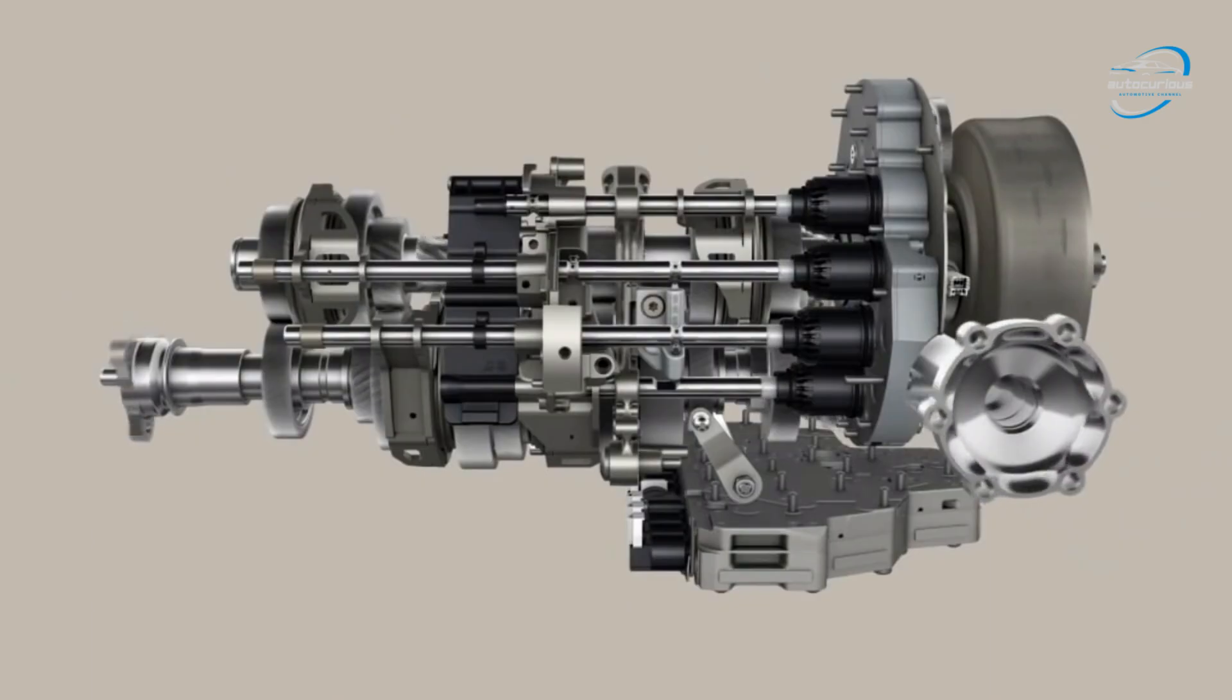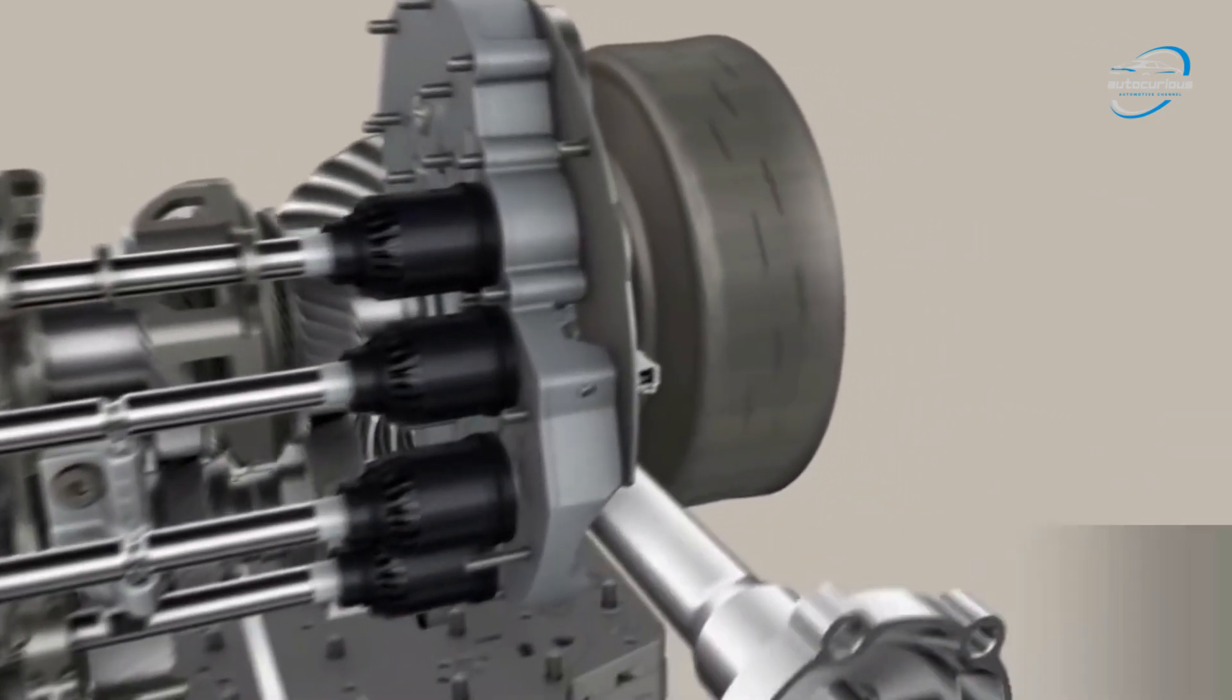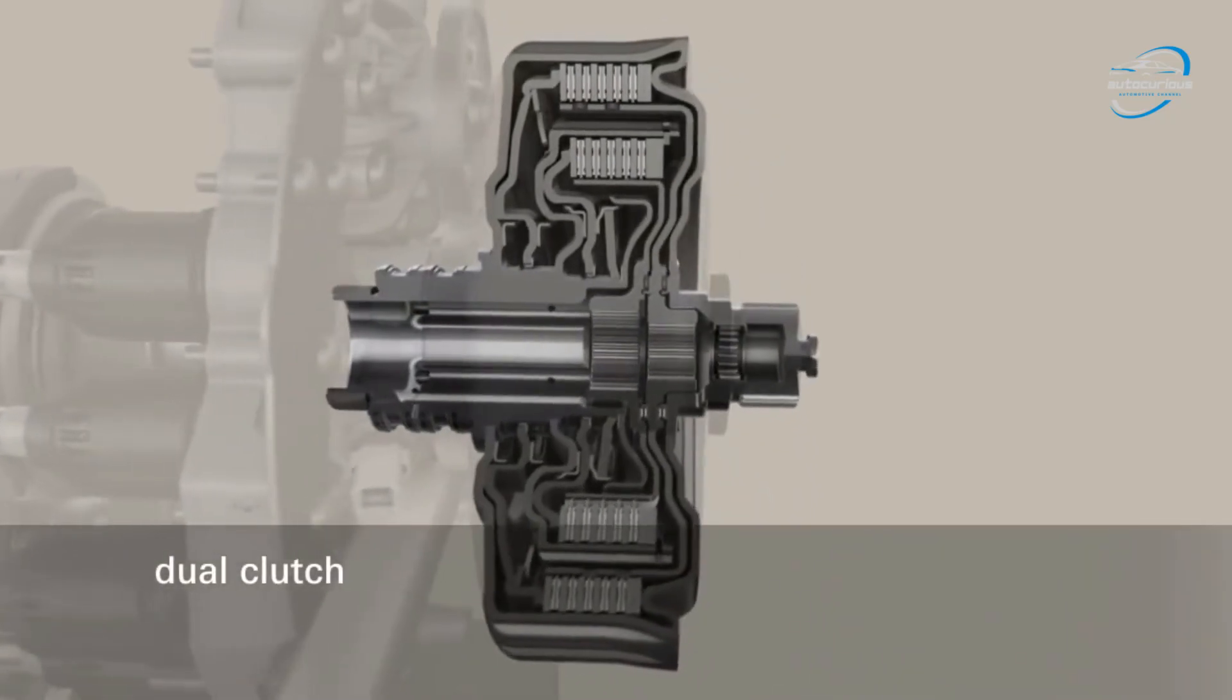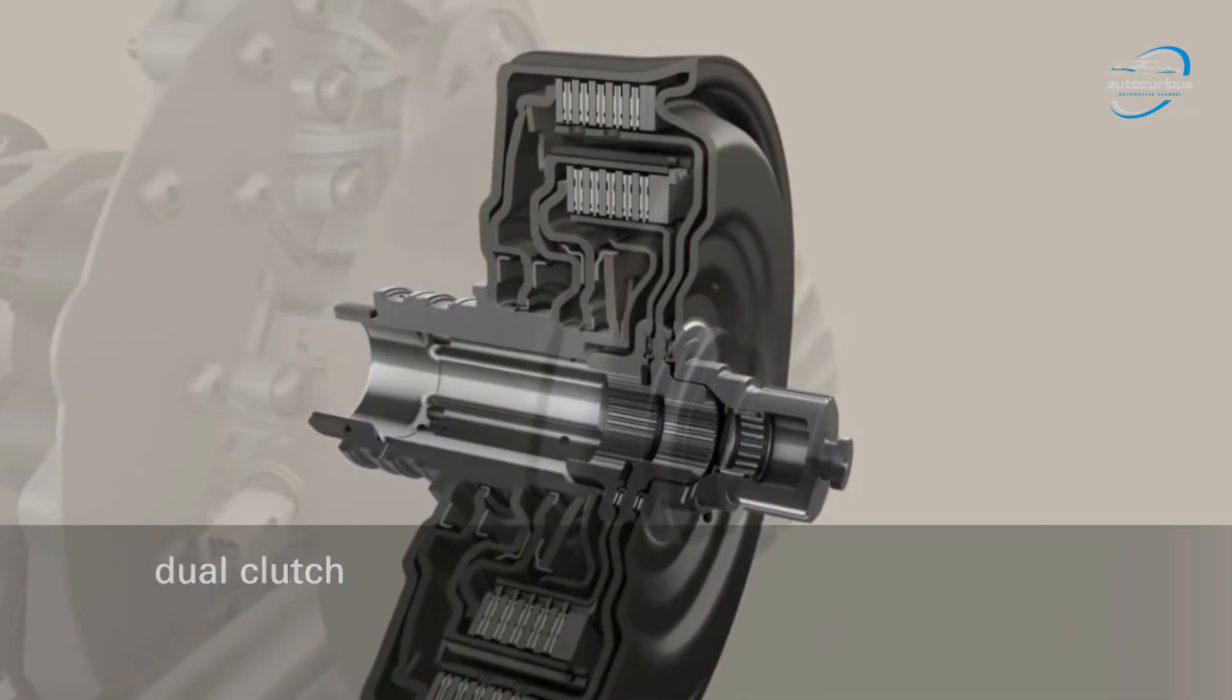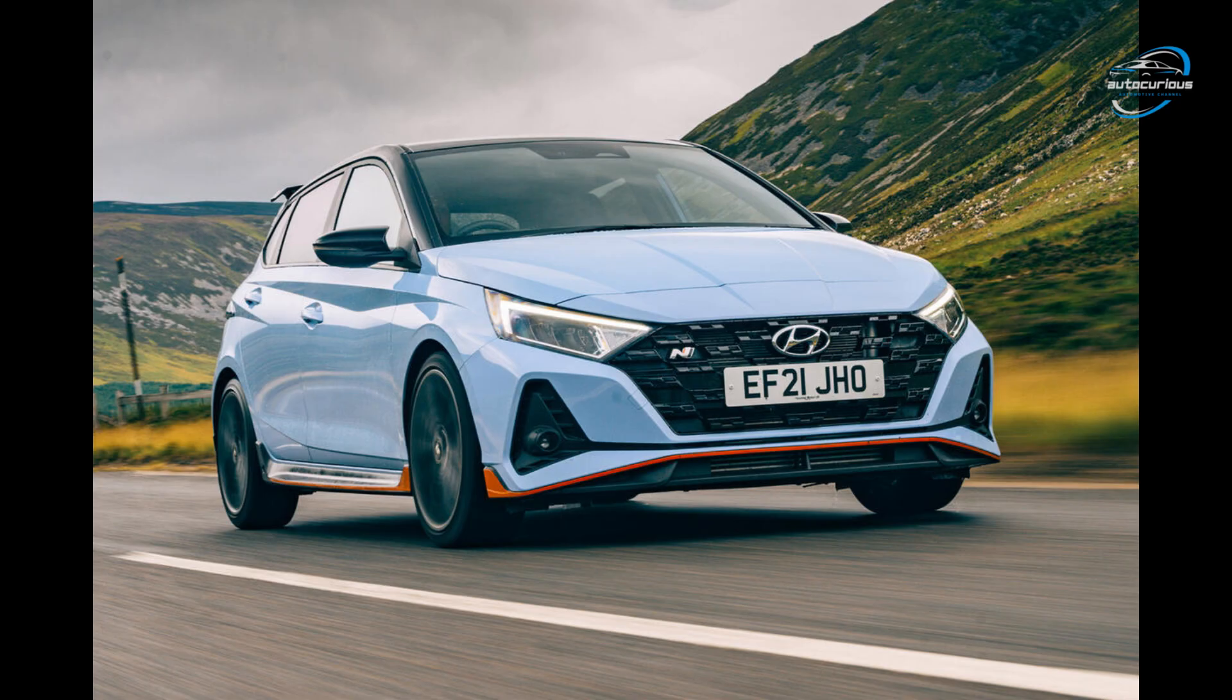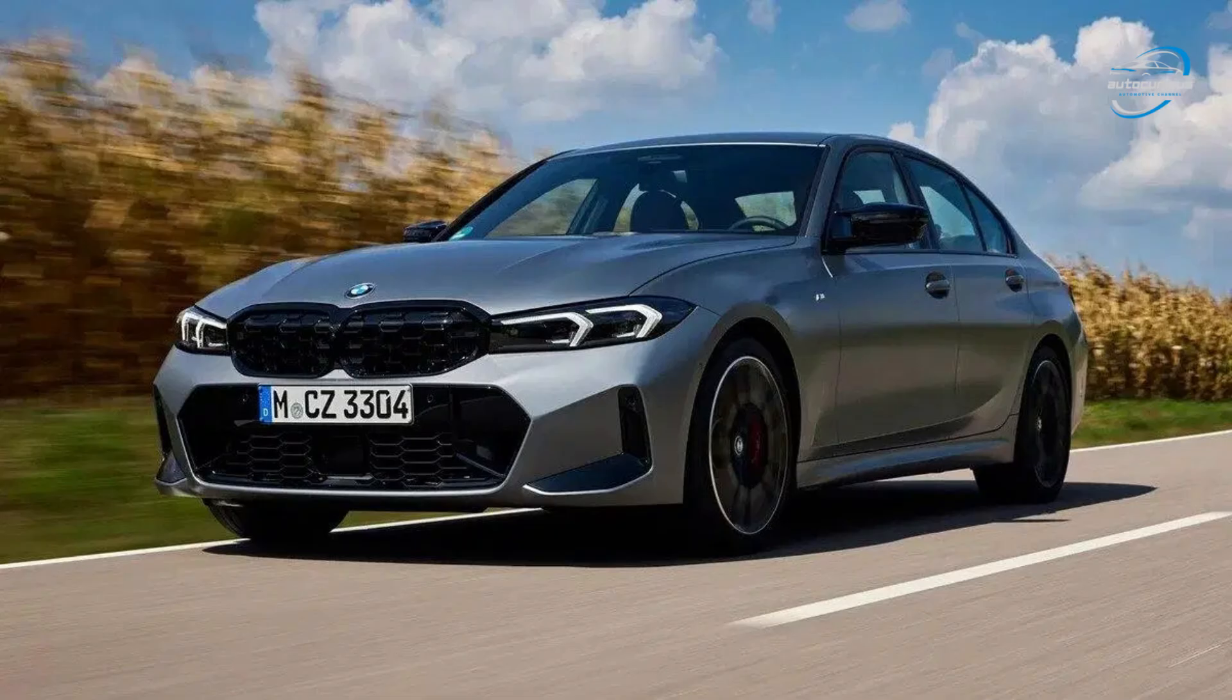Cons of these transmissions are sometimes they can be jerky in stop and go traffic, expensive to maintain, and sensitive to overheating. You'll see DCTs in cars like the Volkswagen Voltage GT, the Hyundai i20 Turbo DCT, and performance models like the Audi S5 or BMW M-series.